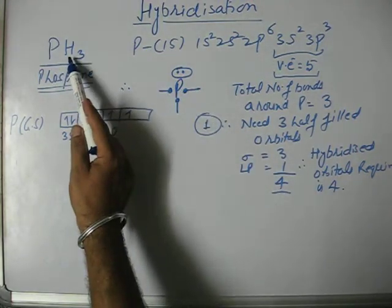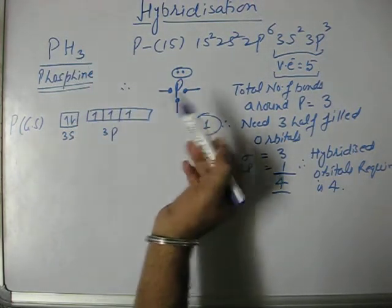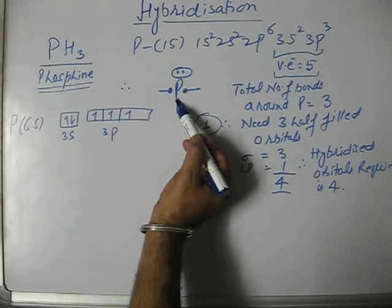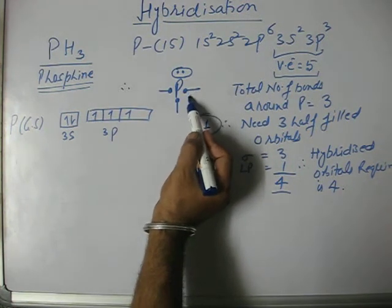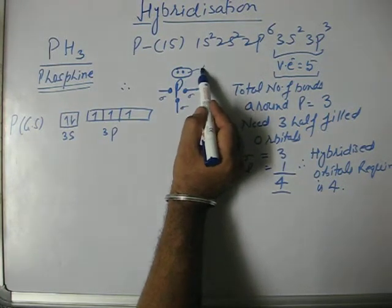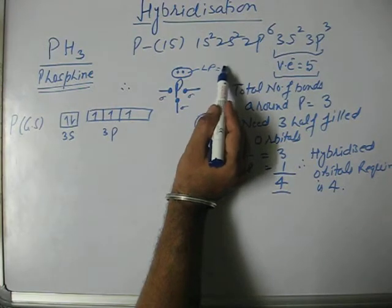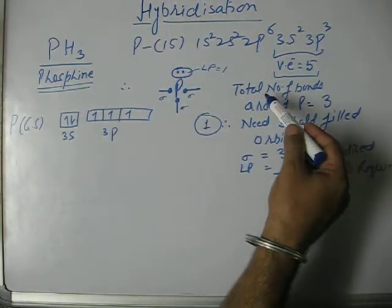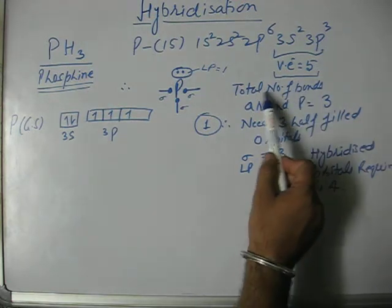Out of these five valence electrons, the combining atom is hydrogen which is monovalent. Therefore, phosphorus uses three of its valence electrons to form three sigma bonds with hydrogen, and two will be left as one lone pair on phosphorus.